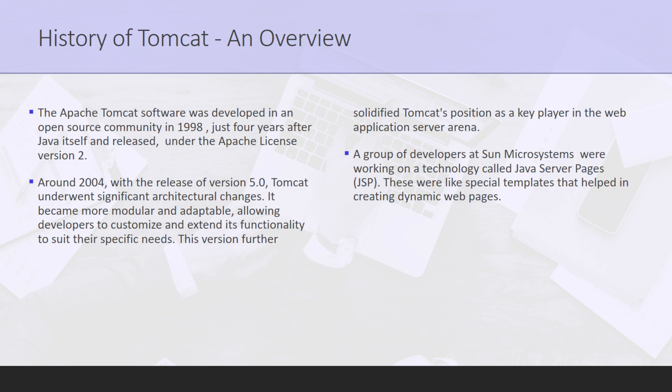Over the years, Apache Tomcat has continued to evolve, incorporating advancements in technology, performance enhancements, and better security features to keep up with the ever-changing web landscape. It has gained widespread adoption and a large community of open source users and contributors around the world. In short, Tomcat is a web server that offers a lot of features, which we will discuss in upcoming modules. Apache Tomcat is used for large-scale, mission-critical web applications across a diverse range of industries and organizations.